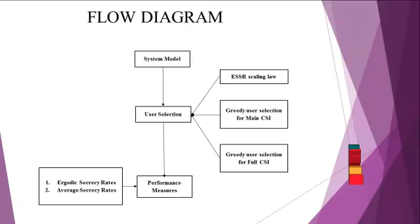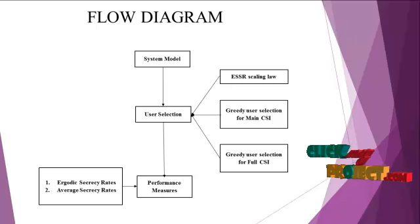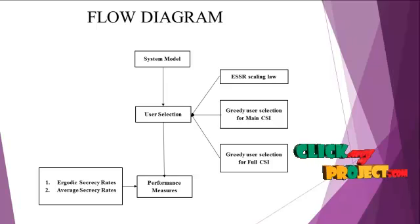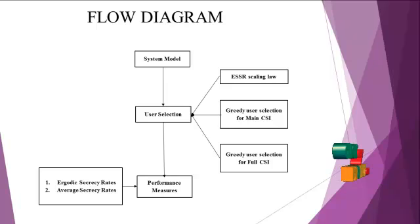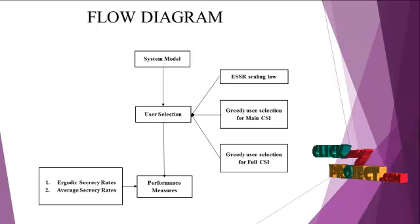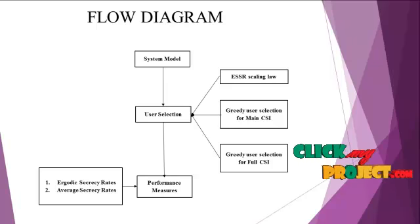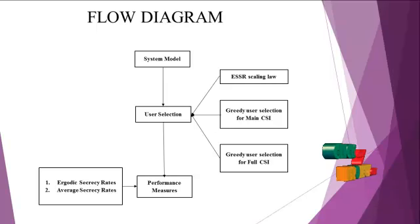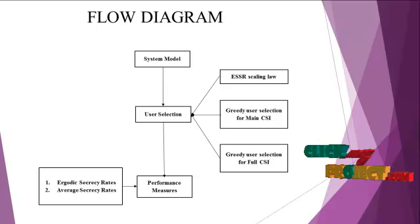In this user selection, there are three important processes. The first one is ESSR scaling law. The second one is greedy user selection for main CSI. The third one is greedy user selection for full CSI. In main CSI, the particular user can select the information to the transmitter.